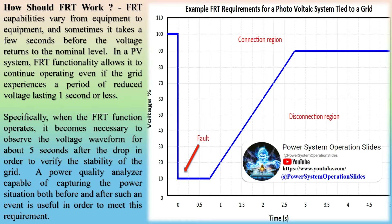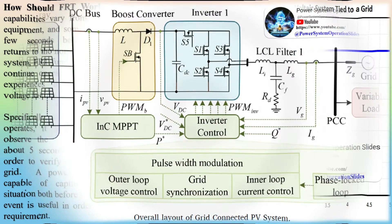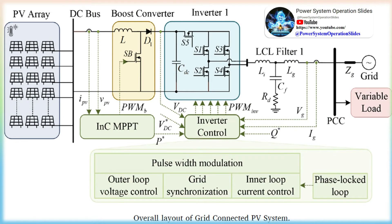When two phases come in contact with the ground, it leads to a double-line-to-ground (LLG) fault. 10% of all faults fall under this type. The LLG fault causes IA = 0, VB = 0, and VC = 0.